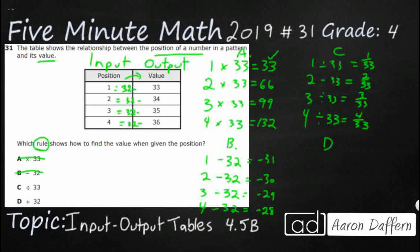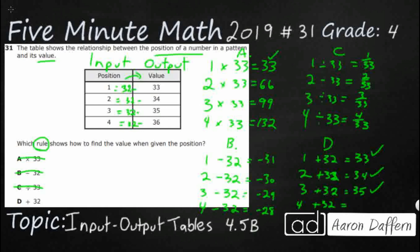So I really hope D is our answer because A, B, and C are all not working. Inputs 1, 2, 3, 4 — option D wants us to add 32. Addition should be better. 1 plus 32 is 33 — check. 2 plus 32 equals 34 — check. 3 plus 32 is 35 — check. And 4 plus 32 is 36 — check! So our rule is going to be plus 32, and our answer is D.